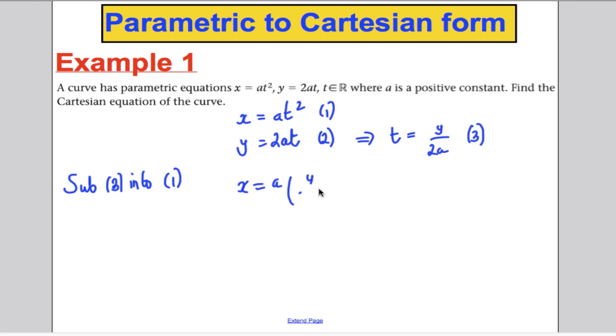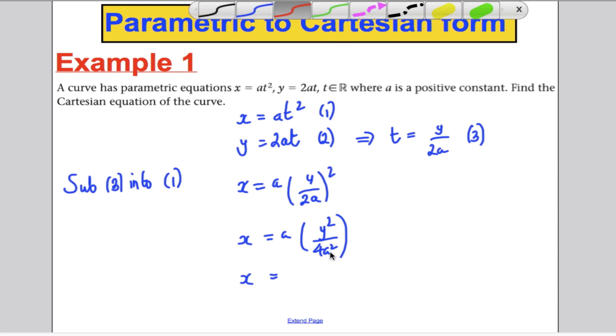And you could substitute 3 into 1. And you would have x equals a multiplied by t squared, which would be y over 2a squared. x would be equal to a, therefore multiplied by y squared over 4a squared.